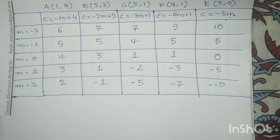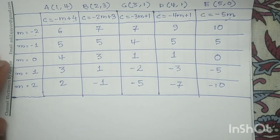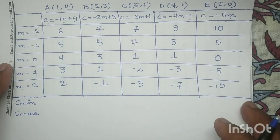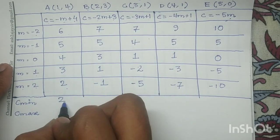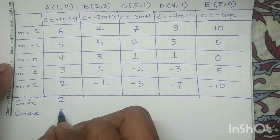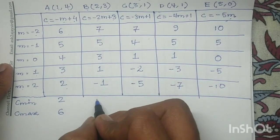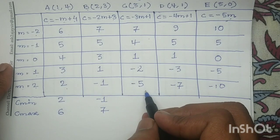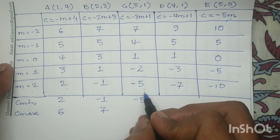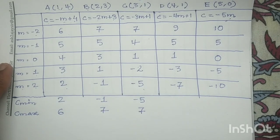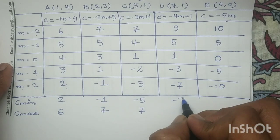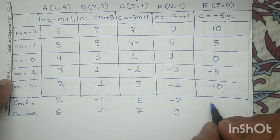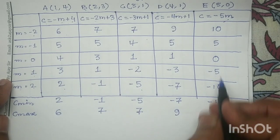After making this table, for each column we write c_min and c_max. Column 1: c_min=2, c_max=6. Column 2: c_min=−1, c_max=7. Column 3: c_min=−5, c_max=7. Column 4: c_min=−7, c_max=9. Column 5: c_min=−10, c_max=10.